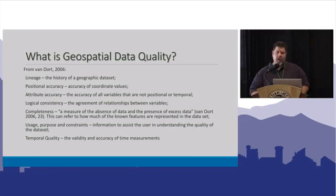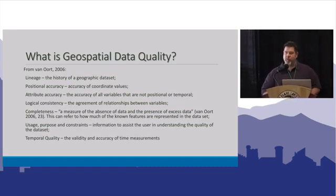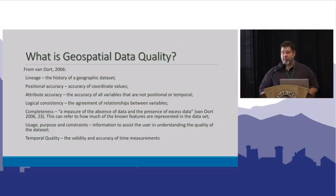All geographic data has some sort of temporal quality — it was either created for a particular time, created at a particular time, or it's only good for a particular time. That temporal quality is something we don't always think about, but it's especially important in a humanitarian crisis, where when the data was created, who created it, and how long it remains valid are critically important.